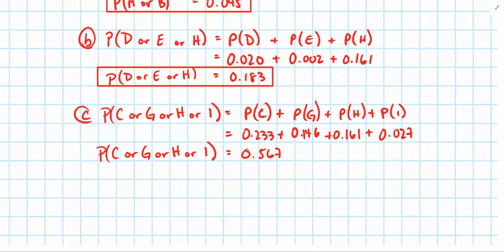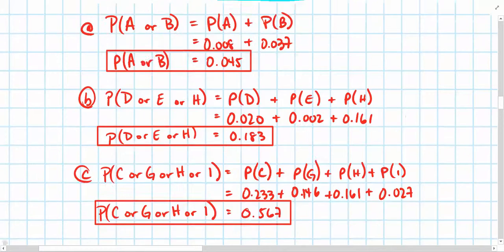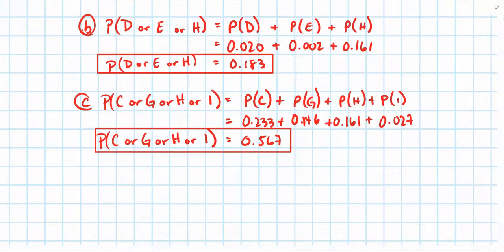So, I went ahead and filled this in to make the video a little bit shorter. You can pause and fill in this data if you didn't see it on your own. But, what we have here is the probability of a spill occurring not in a lake, ocean, river, or canal. And, that comes out to be a probability of 0.567, or approximately 56.7% chance.